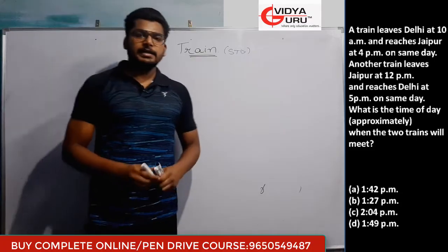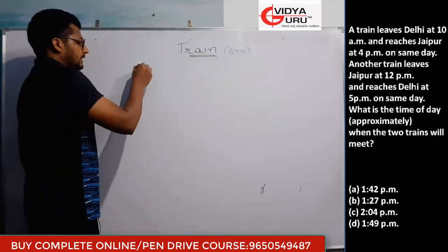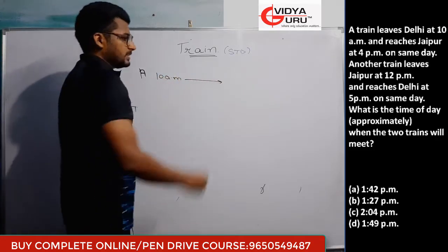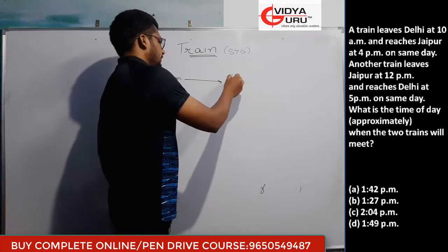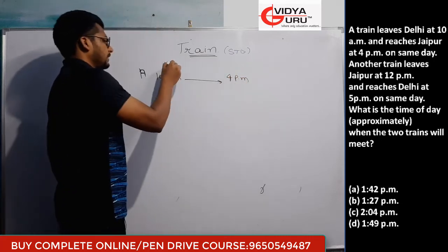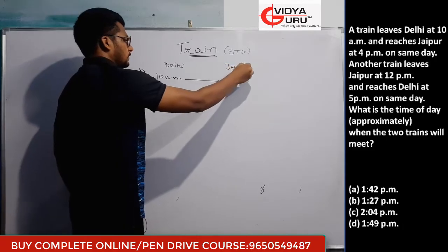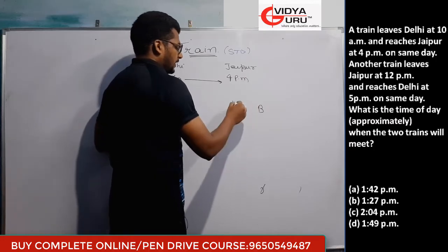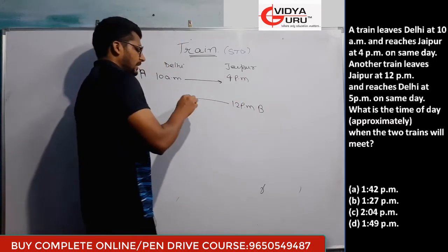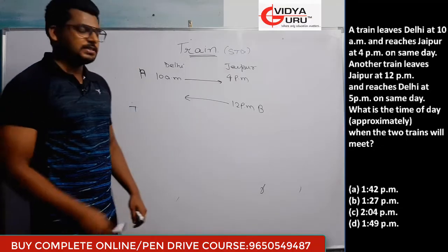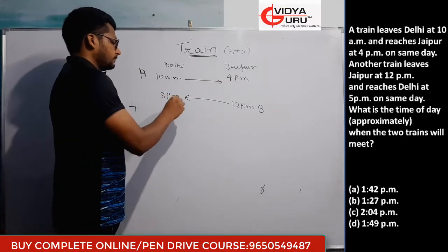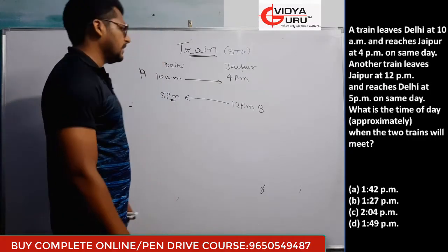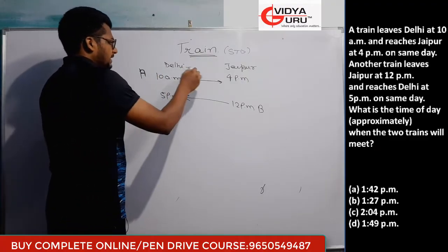Next question: Train A leaves Delhi at 10 AM and reaches Jaipur at 4 PM. Another train B leaves Jaipur at 12 PM and reaches Delhi on the same day at 5 PM. The question asks at what time the two trains will meet approximately.